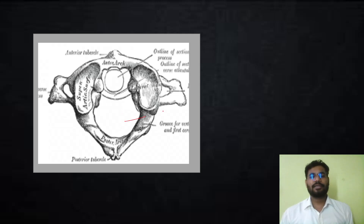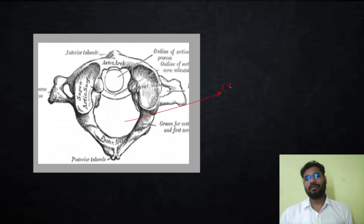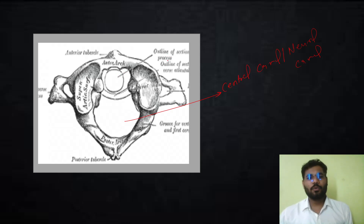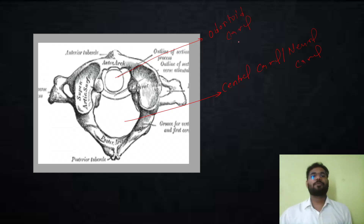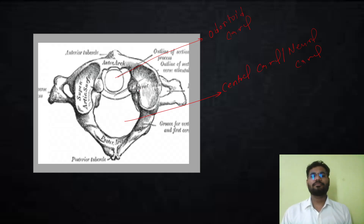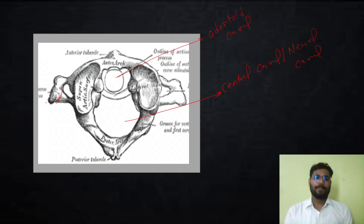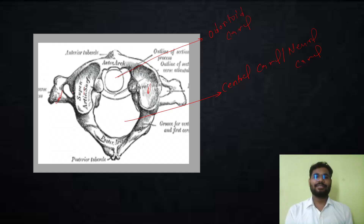You can see the diagram here. This central opening is the neural canal, also called the central canal, through which the spinal cord passes. This other opening is for the odontoid process — the odontoid canal. Reduced transverse processes are visible here, and you can see the facets present for the occipital condyle.